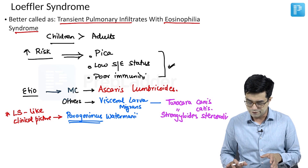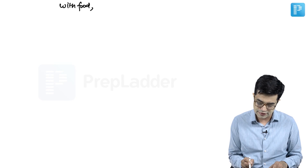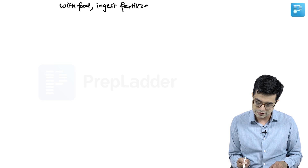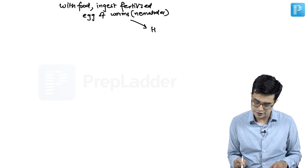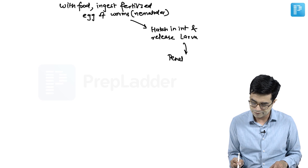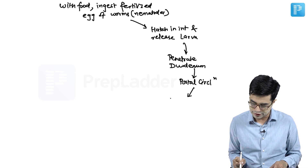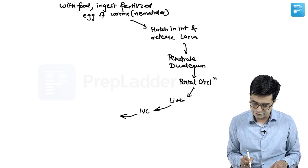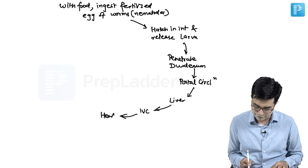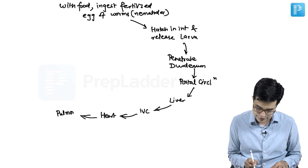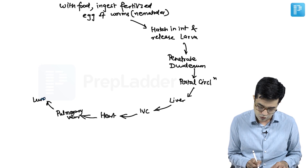To understand what exactly happens in Loeffler syndrome, you need to understand the life cycle — taking the example of Ascaris lumbricoides. With food, the child will ingest the fertilized eggs of the nematodes. These eggs will hatch in the intestine and release larvae. These larvae will penetrate the duodenum and enter into the portal circulation, travel to the liver, then reach the inferior vena cava, then the heart, and from the heart they will reach the lungs through the pulmonary arteries.